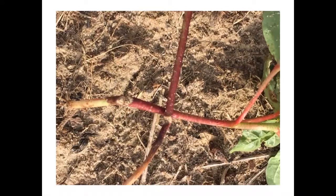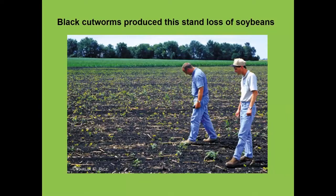On cotton, they can notch the plant stem and maybe not eat all the way through it. They can thin the stand over time. You'll start out with maybe a one to two percent stand loss the first couple of days after the plants start to come up, and then over time you can get up to 10, 20 percent or more stand loss. So they'll get in your pocketbook very quickly if you're not careful and allow them to get ahead of you.